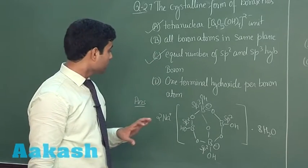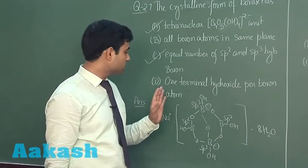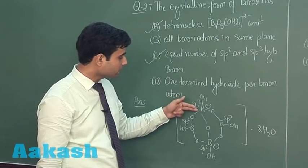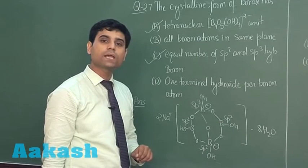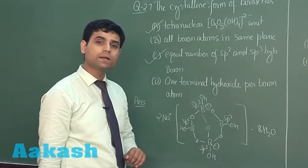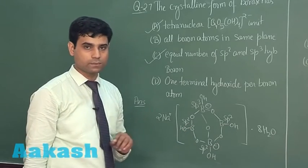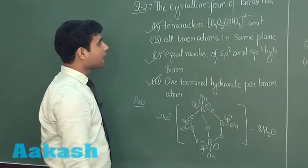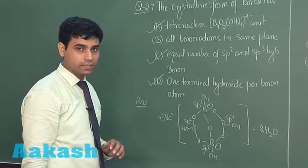The third statement is true. Now, what about the fourth statement which says one terminal hydroxide per boron atom? Here we can see one terminal hydroxide here; at this boron also we have one terminal hydroxide. Here also we have one terminal hydroxide, and in this boron also we have one terminal hydroxide. So this is also a correct option. The correct answers for this question are A, C and D.